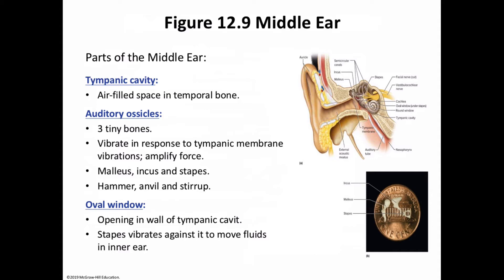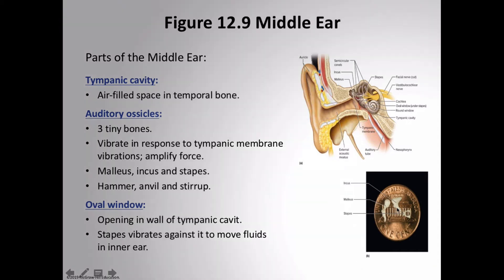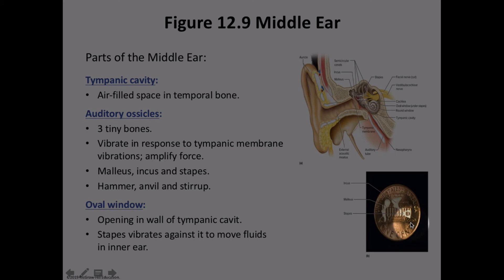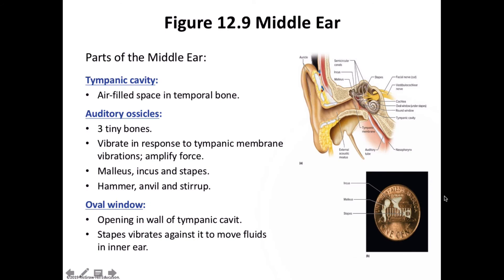The three ossicles — incus, stapes, and malleus — vibrate in response to the vibration of the tympanic membrane, amplifying the force. They can also be called the anvil, stirrup, and hammer respectively. This is the mechanism by which we hear using those bones. The external acoustic meatus passes into the temporal bone where hairs guide and guard the opening, and the tube is lined with modified sweat glands (ceruminous glands) that secrete earwax.